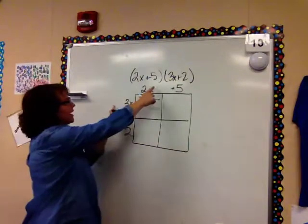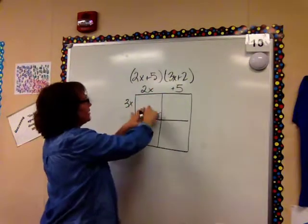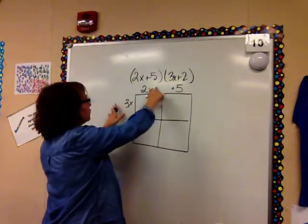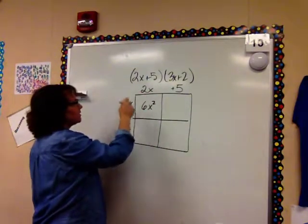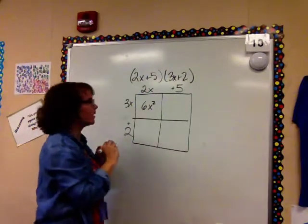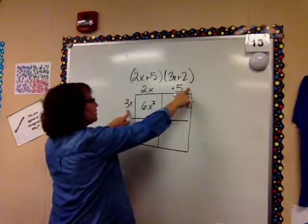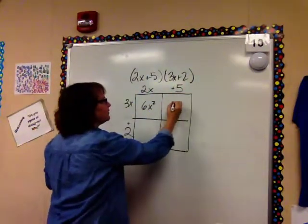Then when I'm multiplying, I'm just going to multiply my different terms here. So 2x times 3x is 6x squared. So 2 times 3 is 6, x times x is x squared. And then I'm going to multiply 3x times 5, which is 15x.